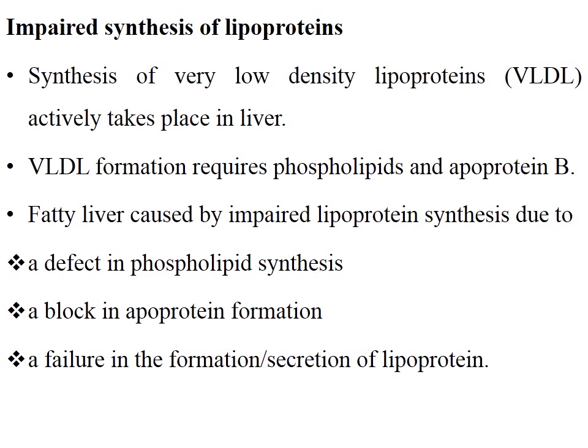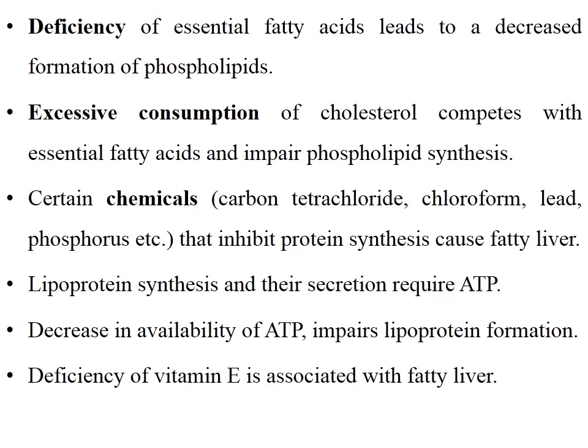Next is impaired synthesis of lipoproteins. Synthesis of very low density lipoprotein (VLDL) takes place in the liver. VLDL formation requires phospholipid and apoprotein B. Fatty liver can be caused by impaired lipoprotein synthesis due to defective phospholipid synthesis, a block in apoprotein formation, or a failure in the formation and excretion of lipoprotein. Deficiency of essential fatty acids leads to decreased formation of phospholipid. Excessive consumption of cholesterol competes with essential fatty acids and impairs phospholipid synthesis. Certain chemicals such as carbon tetrachloride, chloroform, lead, and phosphorus inhibit protein synthesis and cause fatty liver. Lipoprotein synthesis and secretion also require ADP; a decrease in availability of ADP impairs lipoprotein formation. Deficiency of vitamin A is also associated with fatty liver.